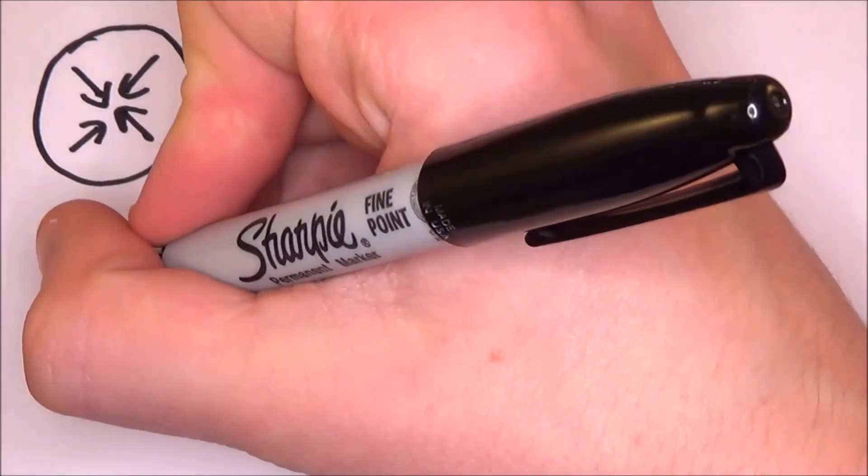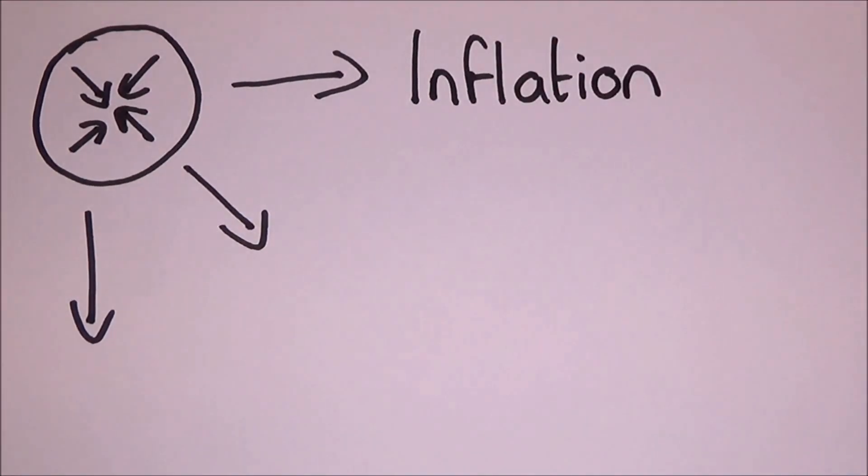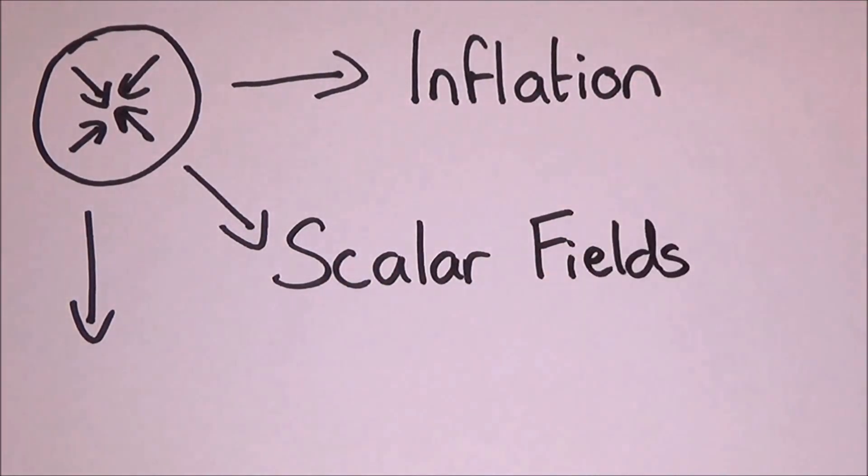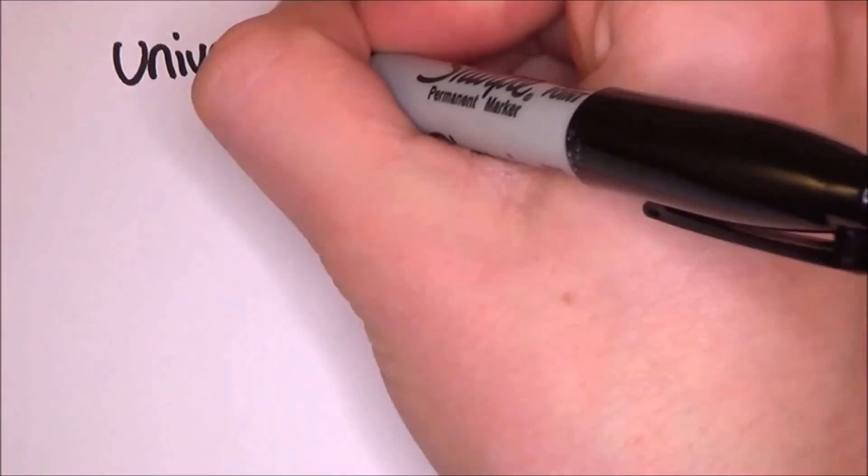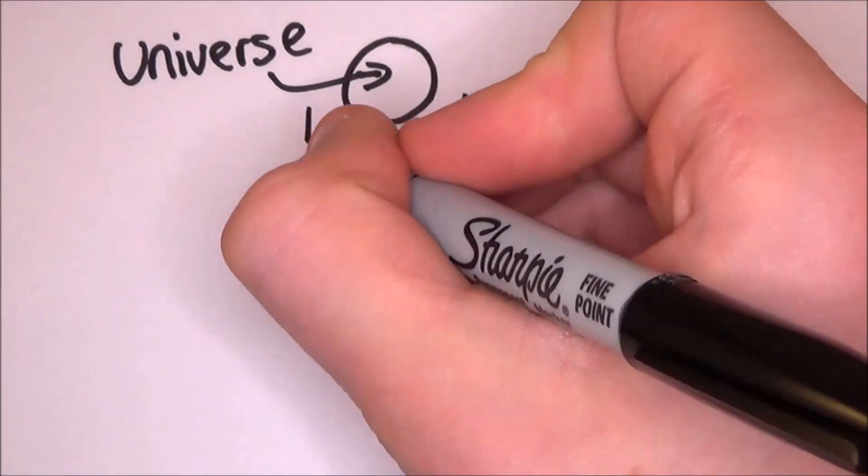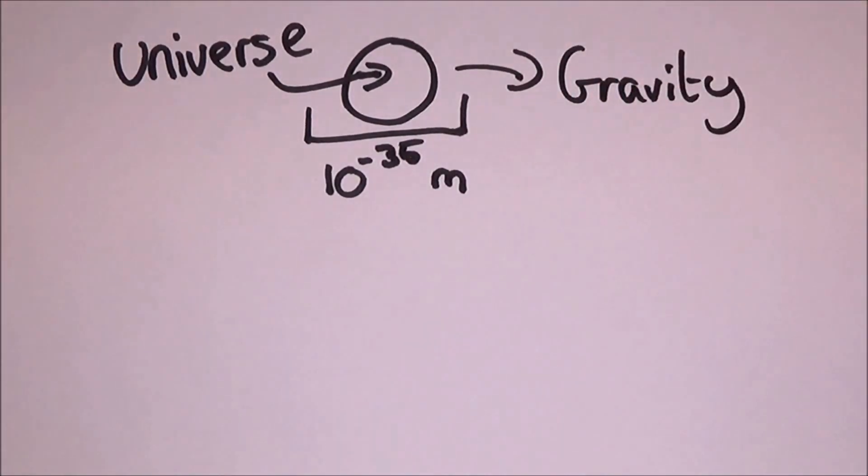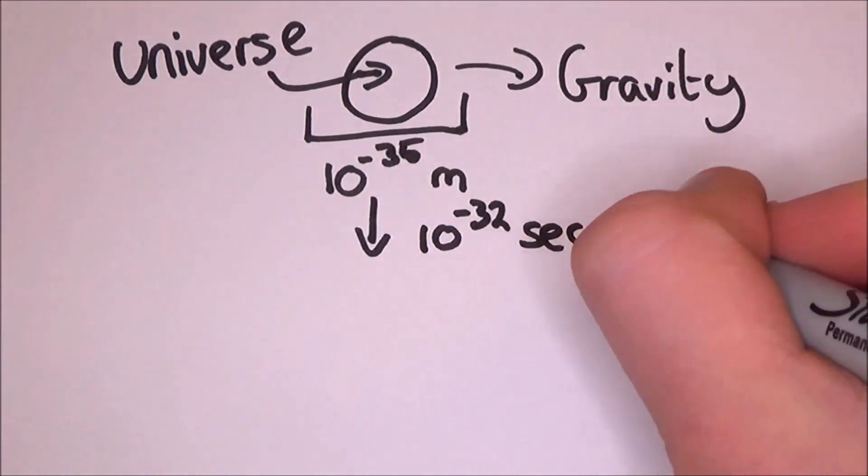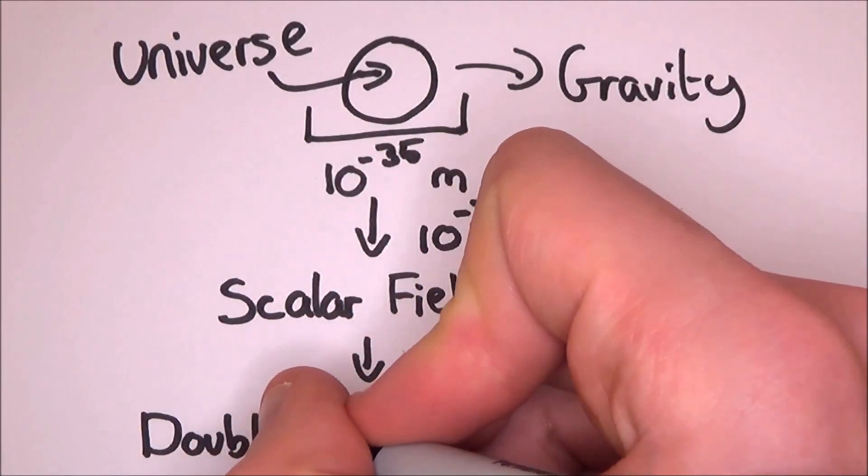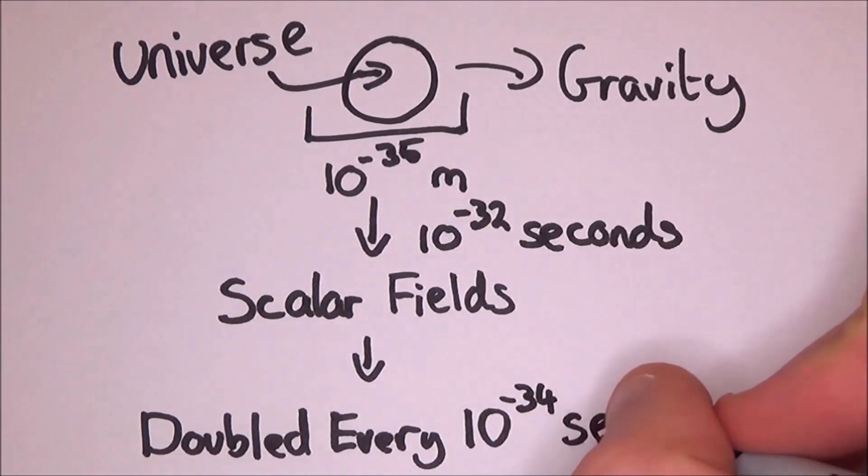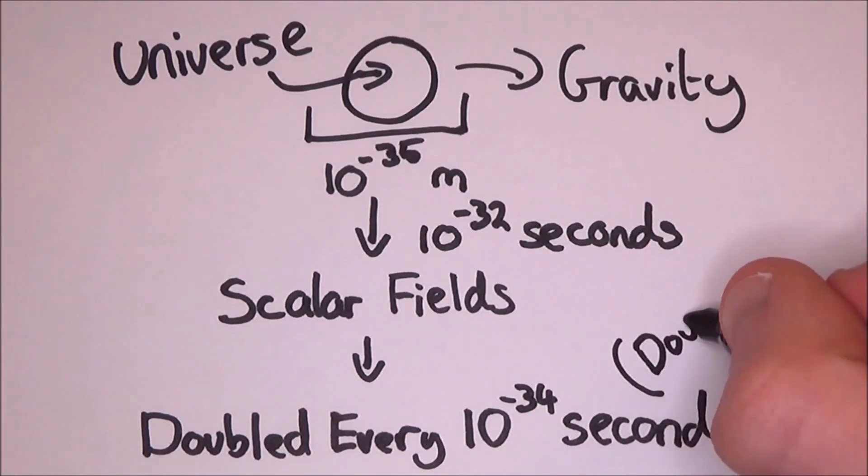But I haven't really explained why inflation can stop the universe's own gravity from crushing it right from the off. The reason is scalar fields, and it was these that split the grand unified force into the four fundamental forces we have today. It works as a kind of anti-gravity. It forces things away from each other. So what happened right at the start was that gravity splits off while the universe is still in its Planck length form. Within about 10 to the minus 32 seconds, the scalar fields would have done all their work and would have doubled the size of the universe every 10 to the minus 34 seconds. That means that the universe doubled in size a hundred times by the time it got to the point where the scalar field had done its job.